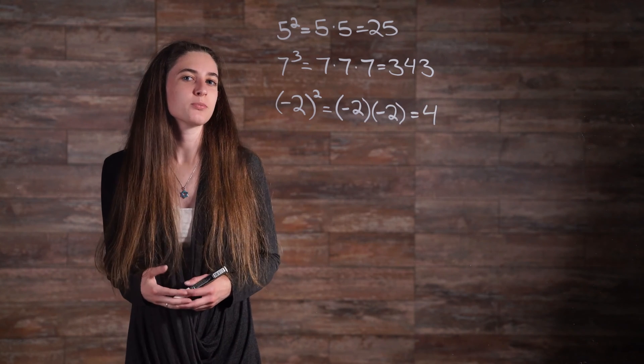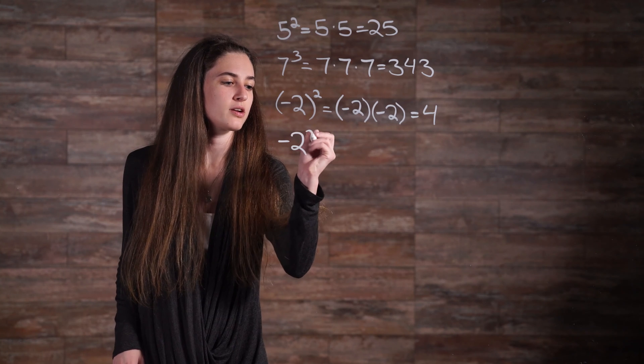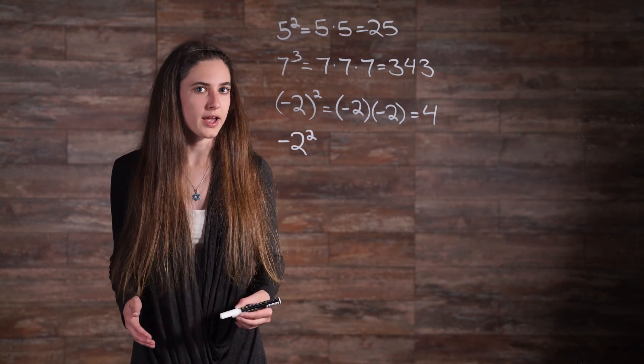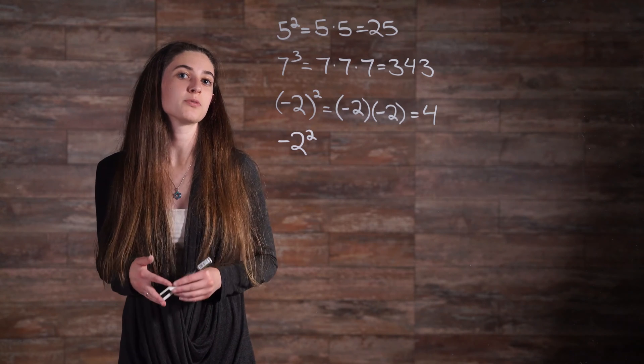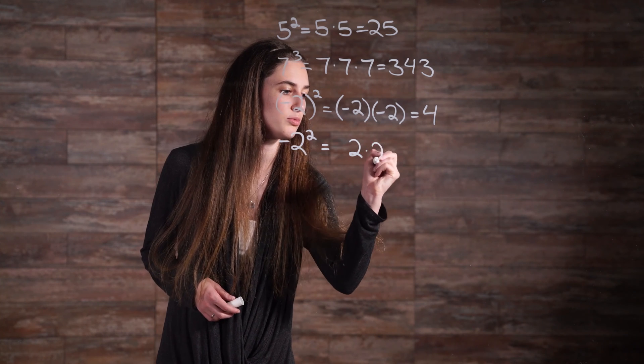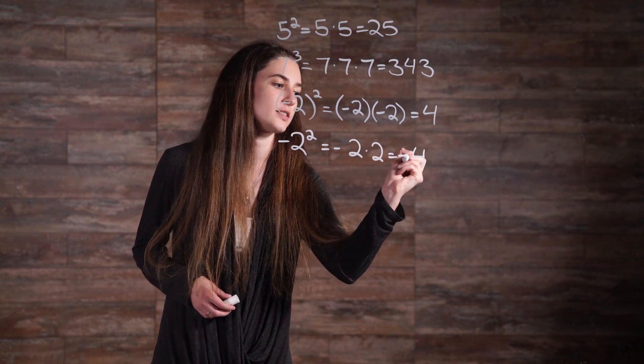But if we were to take the parentheses away and instead say negative 2 squared, then our answer would be negative 4. Why? Because the 2 is squared before the effects of the negative can take place. So we have 2 times 2 equals 4 and then the negative affects it.